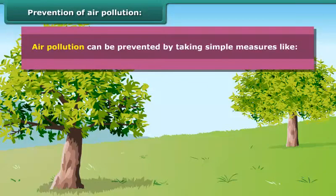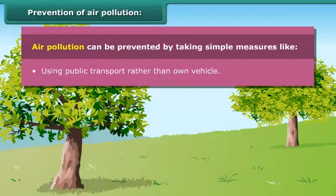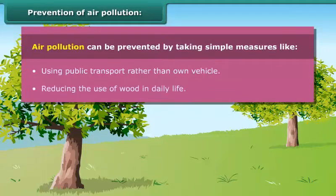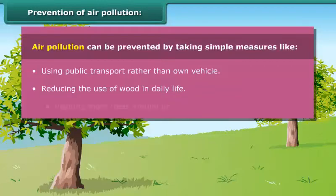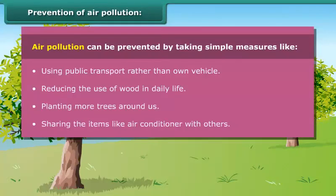Air pollution can be prevented by taking simple measures like using public transport rather than your own vehicle, reducing the use of wood in daily life, planting more trees around us, and sharing items like air conditioners with others.